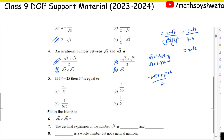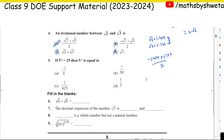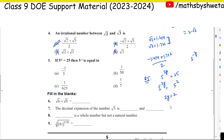The answer is option A. For question 5: if 5 raised to power 2y is equal to 25, find 5 raised to power minus y. We simplify: 25 = 5², so 5^(2y) = 5², which gives 2y = 2, so y = 1. Then 5^(−y) = 5^(−1) = 1 upon 5. That is the answer.